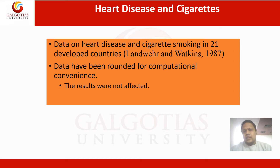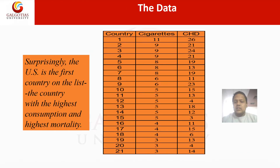We have taken data on heart disease and cigarette smoking in 21 developed countries. The data have been rounded for computational convenience, and rounding does not affect our results. In the table, column one gives country numbers 1 to 21, column two gives the number of cigarettes smoked per day, and column three gives the mortality rate corresponding to the serial number of each country.